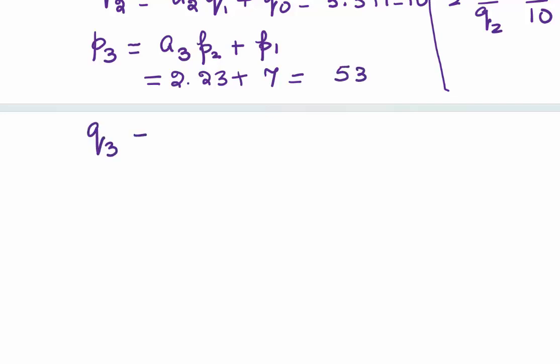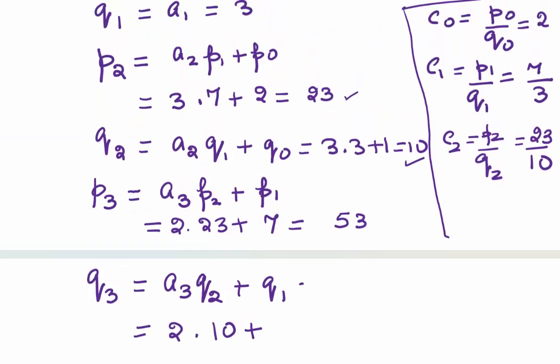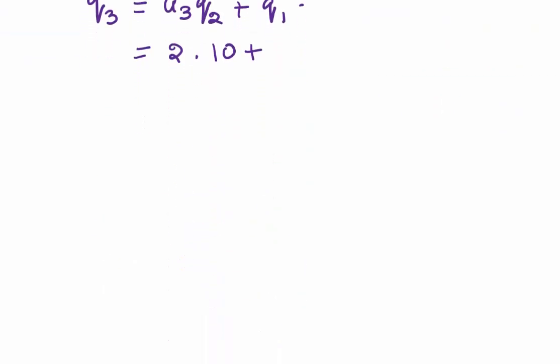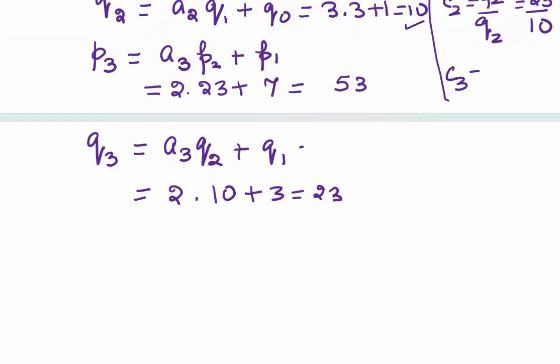Come to Q3. Q3 = a3·Q2 + Q1. a3 is 2, Q2 is 10, Q1 is 3. So we add 3 here. This gives me 23. What does our C3 come out to? C3 = P3/Q3 = 53/23. And this is nothing but the original quotient we had started with.